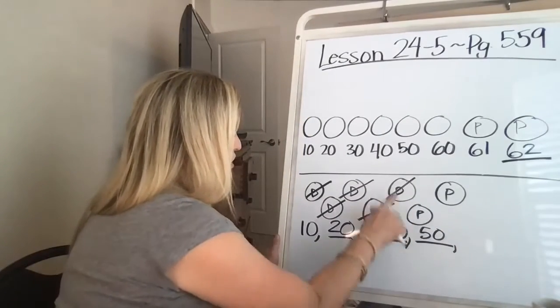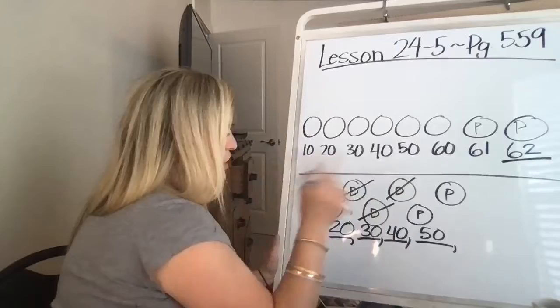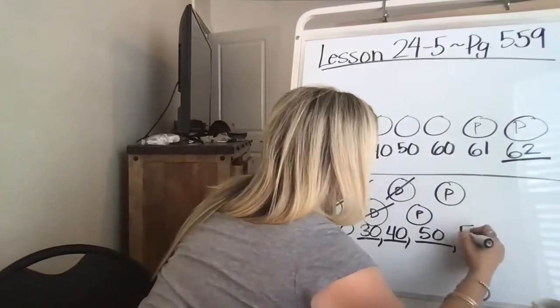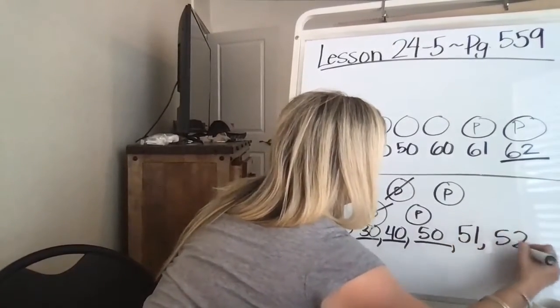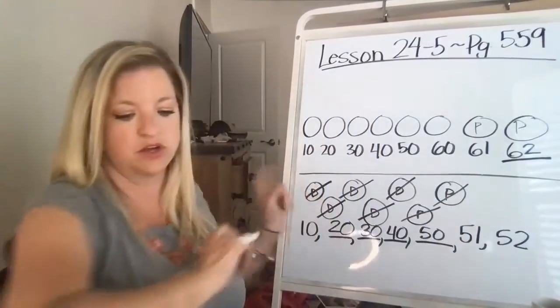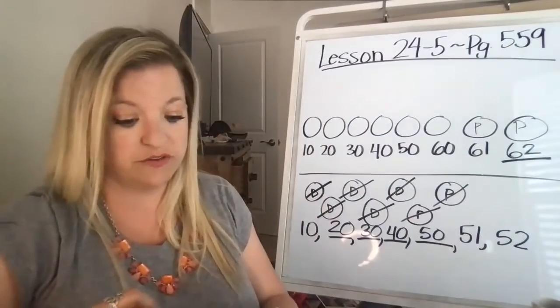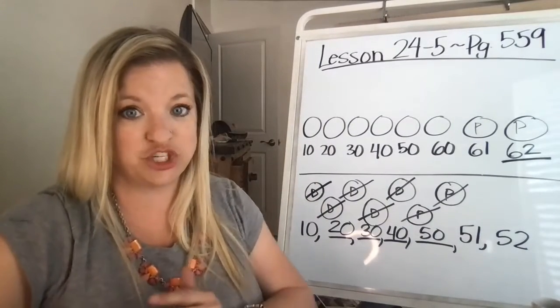1, 2, 3, 4, 5. 1, 2, 3, 4, 5. Check. And now I'm going to count by ones. 51, 52 because pennies are worth one cent. So the value of these coins is 52 cents.